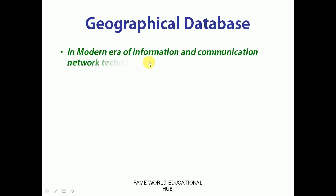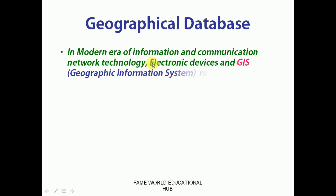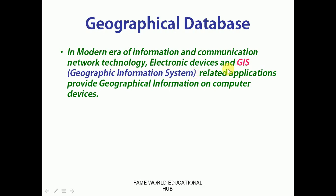In the modern era of information and communication network technology, electronic devices and GIS — that is, Geographic Information System — related applications provide geographical information on computer devices. As we know, we also use locations and maps like Google Maps on our mobile devices and even on our laptops or computers. We can see how frequently and easily we can access our location or some other locations on Google Maps.